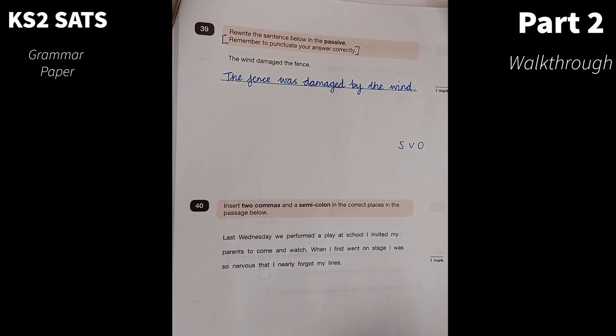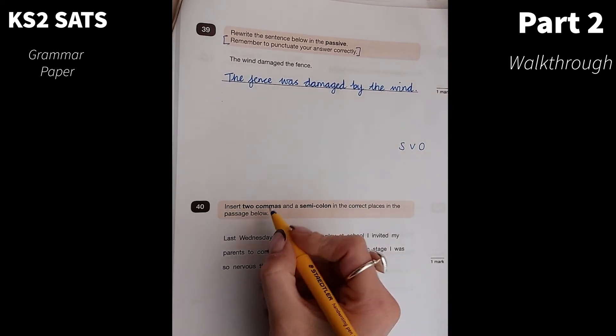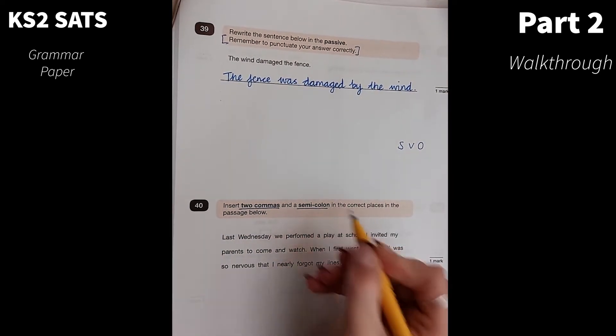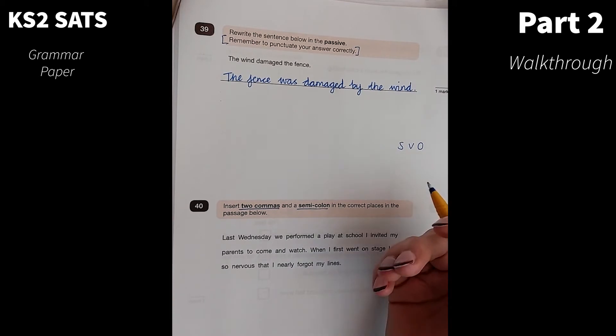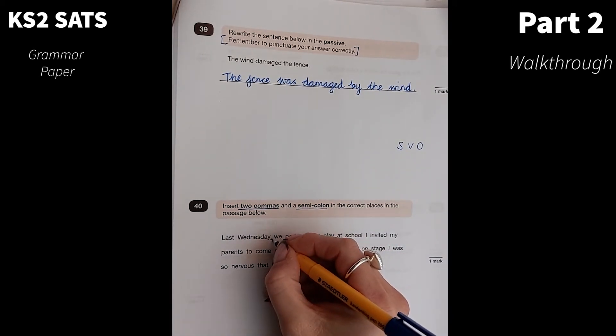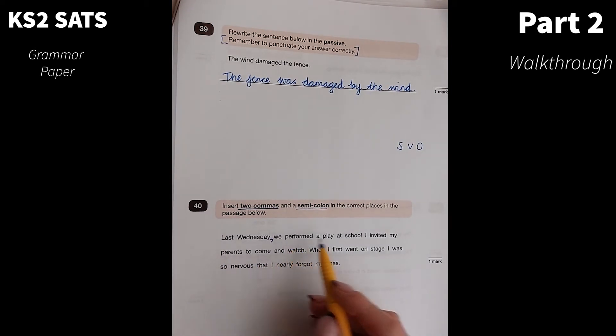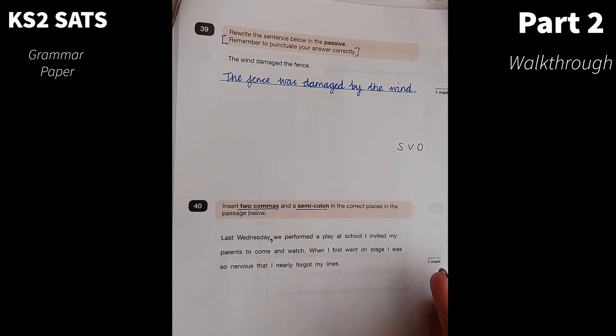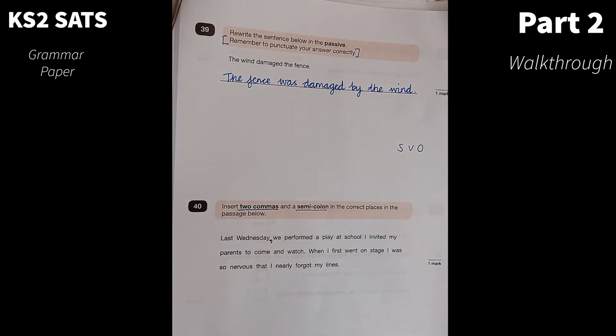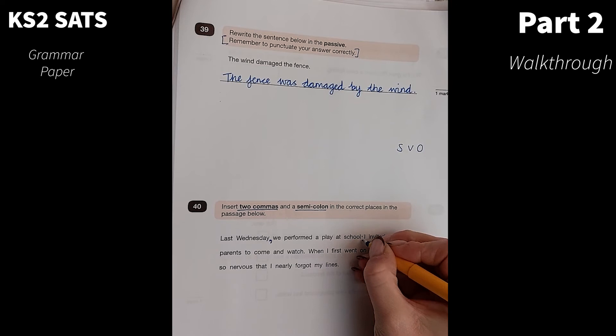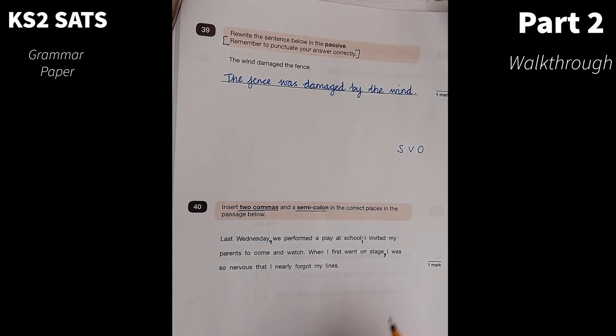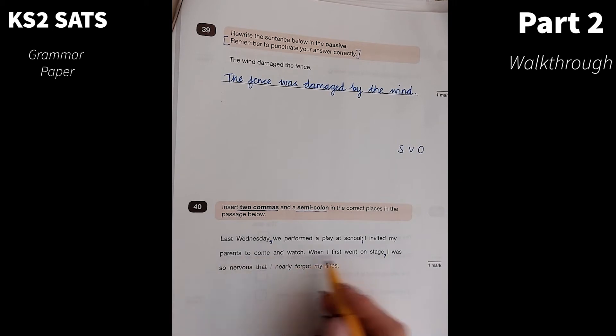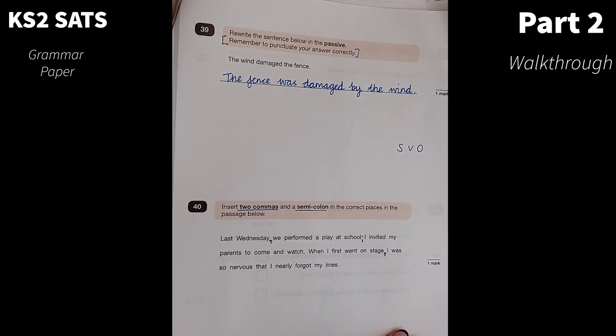Insert two commas and a semicolon in the correct places in the passage below. I'm looking for a place where I can put commas and a semicolon, which usually goes between two main clauses which link in meaning. Last Wednesday. Well, I know last Wednesday would be my fronted adverbial there. So I'm going to put a comma in there. Last Wednesday, we performed a play at school. Well, that's the end of a sentence. Let me see if I can read on and see if a semicolon could possibly go there. I invited my parents to come and watch. So definitely, that is going to be my semicolon. When I first went on stage, that's my fronted adverbial, so my comma would need to go there. I was so nervous that I nearly forgot my lines.